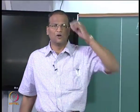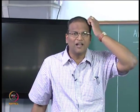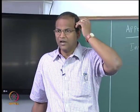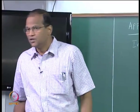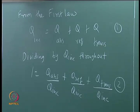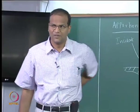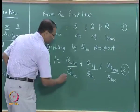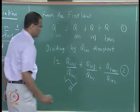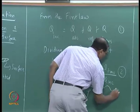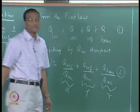Dividing through by Q_incident, the three terms on the right side are all dimensionless ratios, none of which can be greater than 1 individually, and their sum equals 1. They are measures of efficiency: the efficiency with which the surface absorbs, the efficiency with which it reflects, and the efficiency with which it transmits. Q_absorbed / Q_incident is called absorptivity, alpha; Q_reflected / Q_incident is called reflectivity, rho; and the transmissivity is tau.